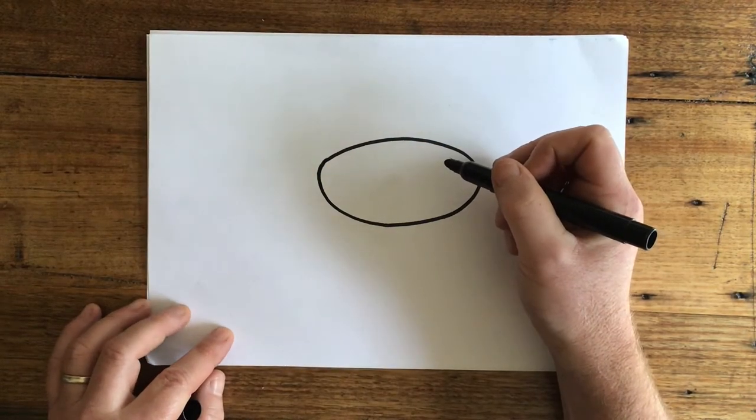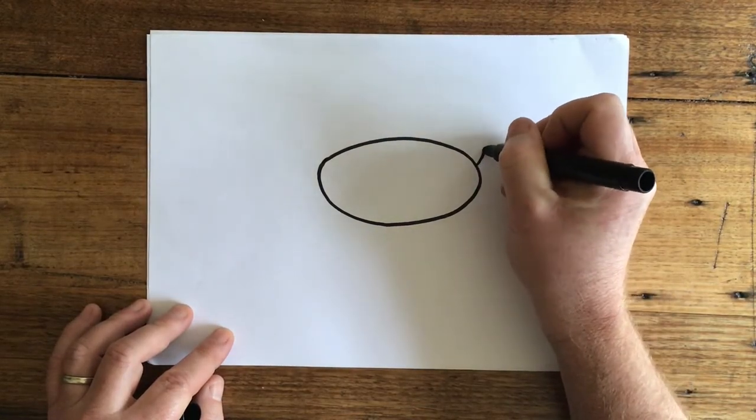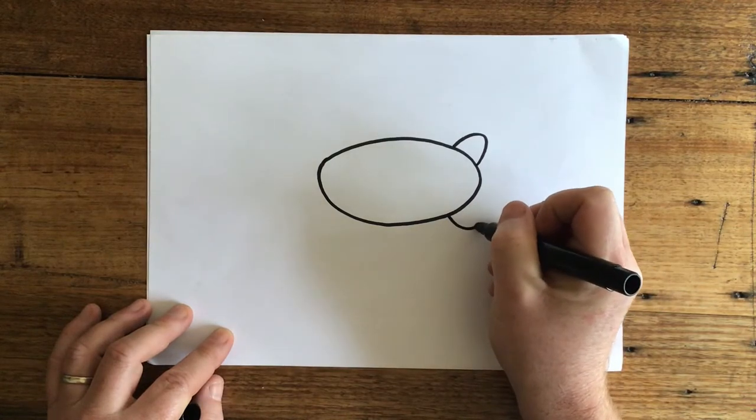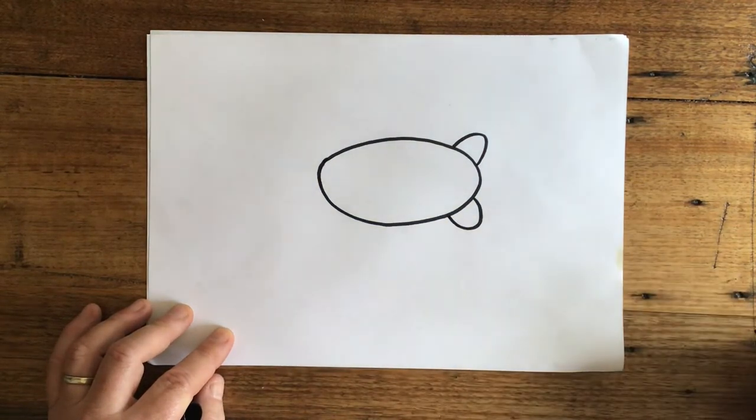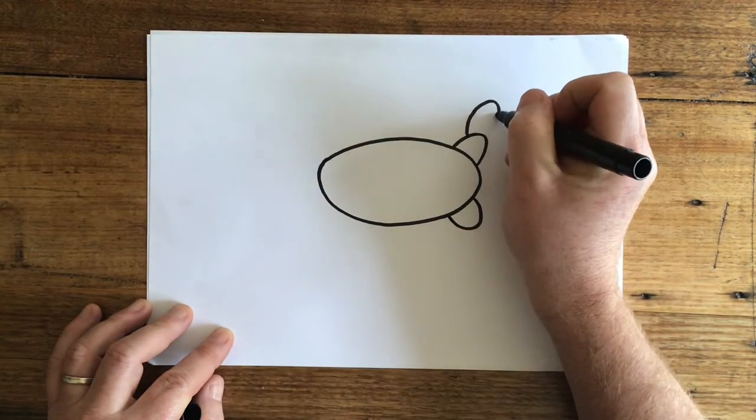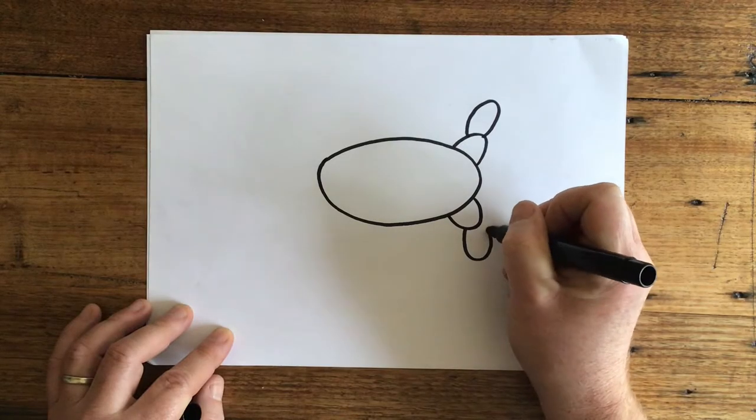Okay, now let's start by putting in the pincers at the front. So let's do a little curve like this and a curve on the other side like this. Now let's add another curve to that curve and another curve like this.